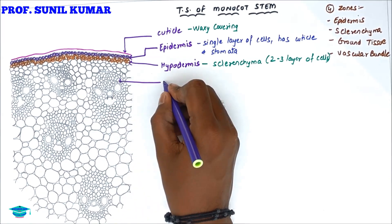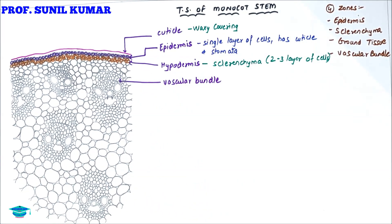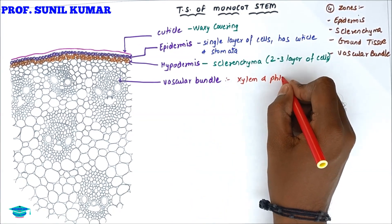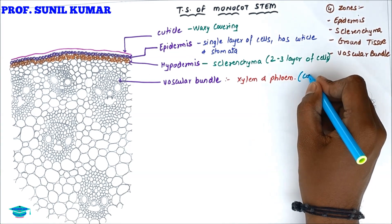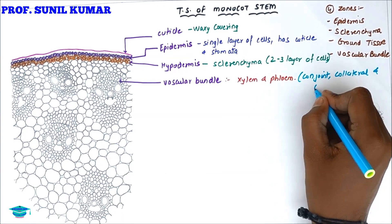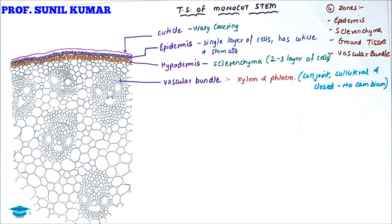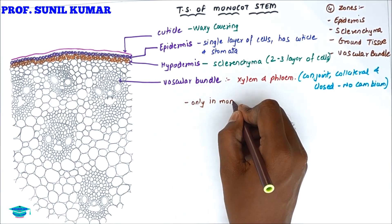The next part is the vascular bundle. In monocot stem, the vascular bundle is conjoined, collateral, and closed. When I use the word closed, it simply means that there is no cambium. The vascular bundle is scattered in the cortex.